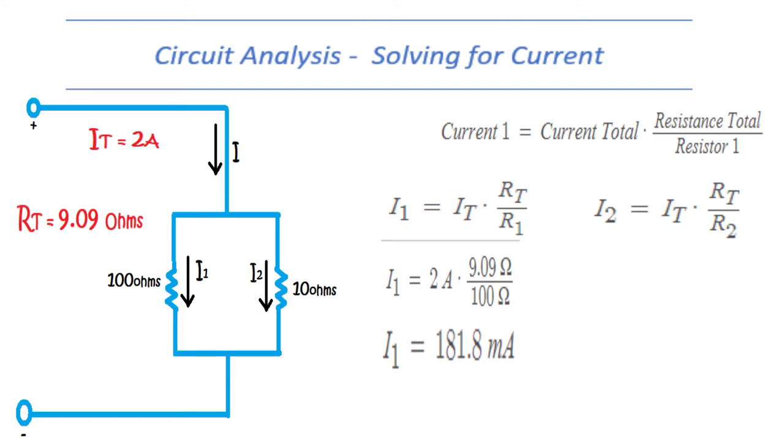By repeating this for I2 we can see that the current flowing through the second resistor is larger at 1.81 amps as expected.